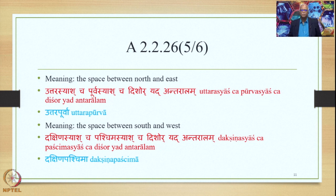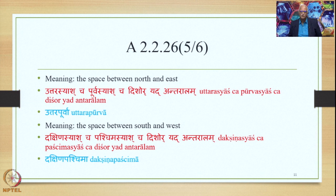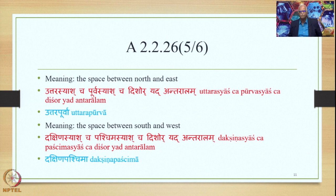Similarly, when the meaning to be conveyed is the space between North and East, we do the same processing and get the finally derived compound output Uttarapurva (northeast). And we do the same processing to arrive at Dakshana-Pashchama (southwest). Dakshana and Uttara are both mentioned in the Sarvadigana and therefore understood as Sarvanama. Therefore, Sarvanamno Vrutti Matre Pumadbhava applies to them, and Pumadbhava is performed, giving us the forms Uttarapurva and Dakshana-Pashchama.